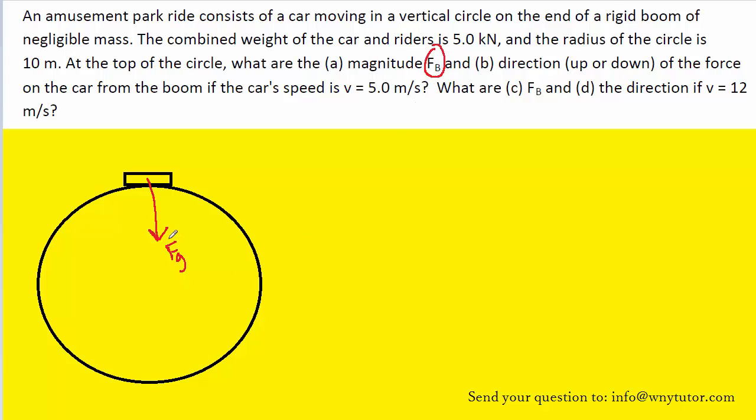And what's kind of tricky about this question is we don't know the direction that Fb is pointing. In fact, that's one of the things that we're being asked to find. So there is a force that we can label as Fb. We can perhaps temporarily label it in the positive direction.